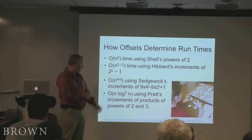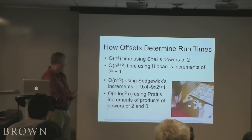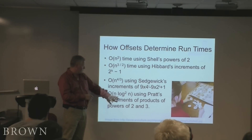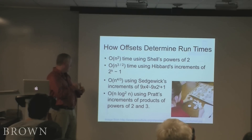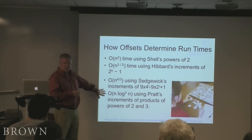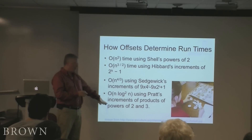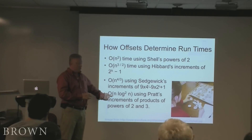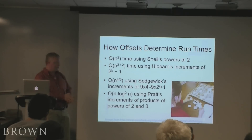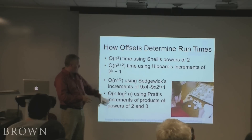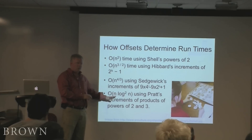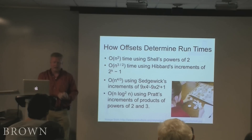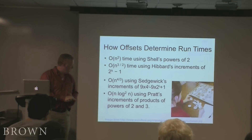Sedgewick shows how you can get down to O(n^(4/3)) using fancier offsets. Pratt shows that if you use offsets that are all products of powers of 2 and 3, you can get a running time of O(n log² n). But it has been an open problem for many years — actually still open for deterministic shell sort — whether you can achieve O(n log² n). A lower bound shows that deterministic shell sort cannot beat O(n log² n / log log n). So the only hope to reach an optimal O(n log n) running time is to introduce randomization, which is what I'm going to do.